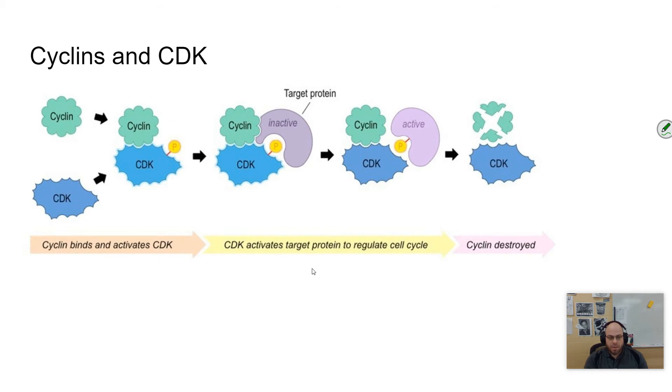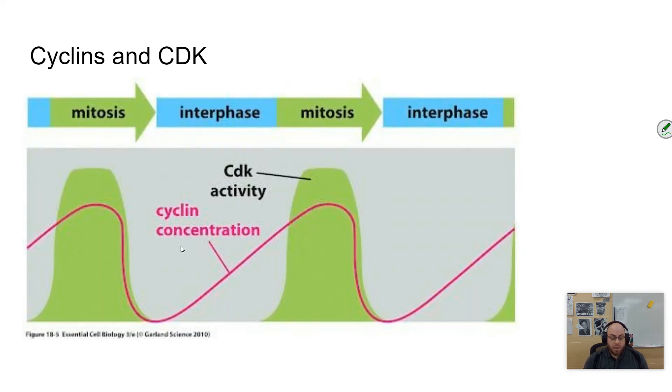Cyclin-dependent kinase is an enzyme that is always present in the cell. Cyclin doesn't work unless it binds with that CDK. Once it binds with CDK, it's able to do its work. You can see here that cyclin concentration goes up and down, but CDK is an enzyme, so it's always around.